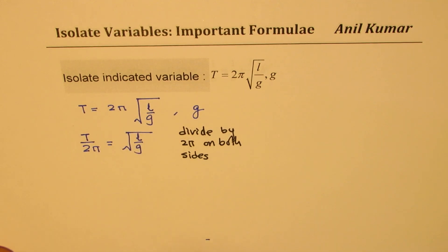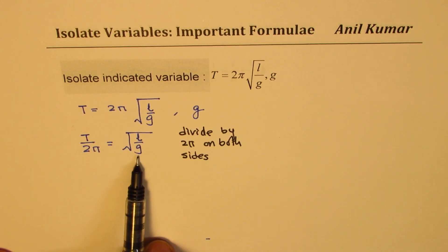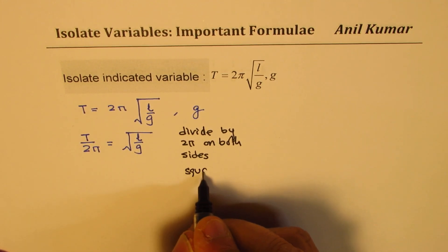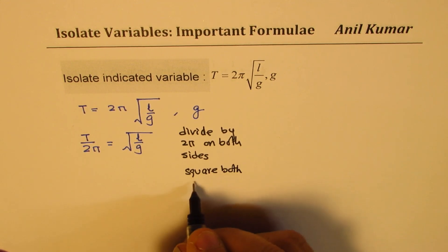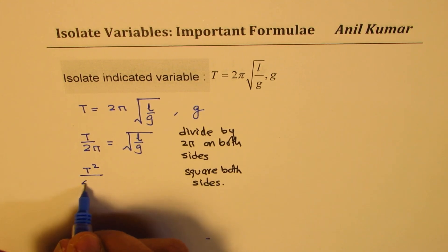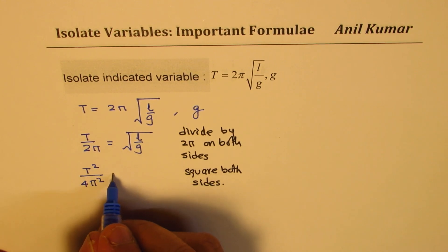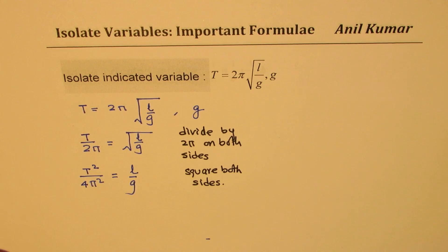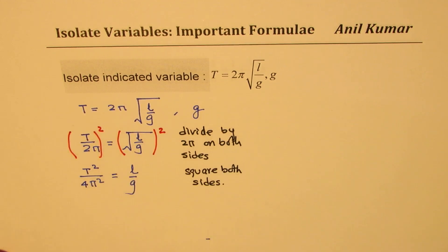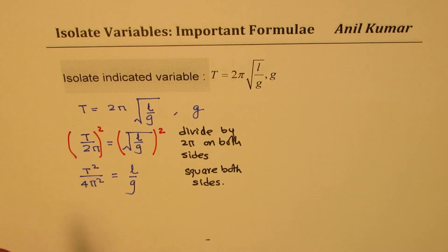Now we want g, which is within the square root, so the next step is to square both sides. It becomes t squared over 4π squared equals to l over g — don't forget to square 2, giving 4. Square root and squaring are reciprocals of one another, so we get l over g. Now we cross multiply: take g to one side and the rest of the terms to the other.